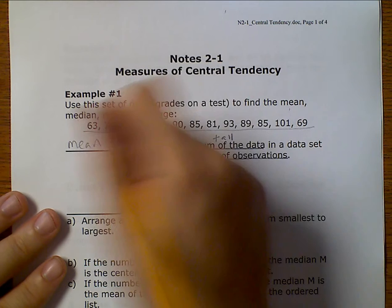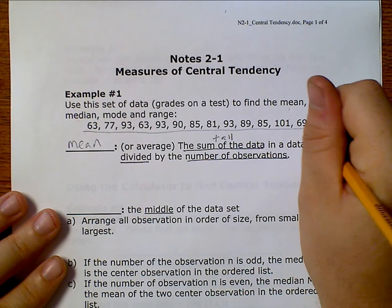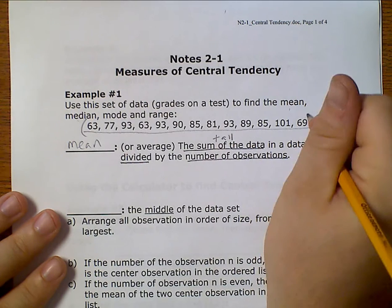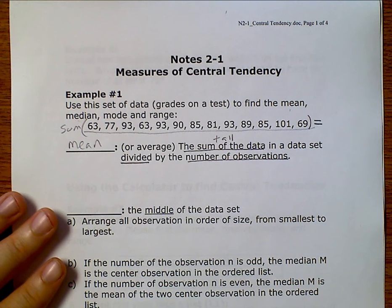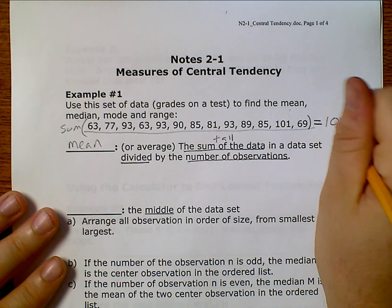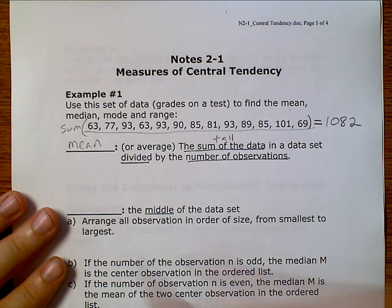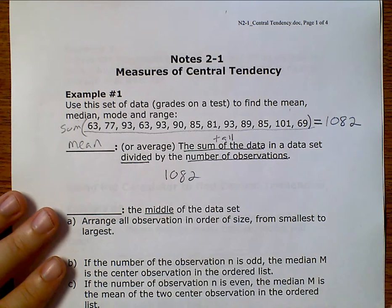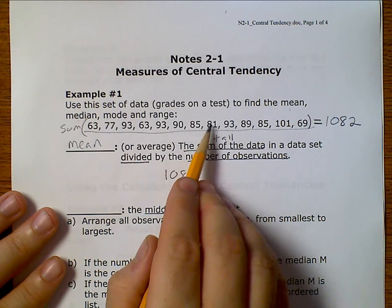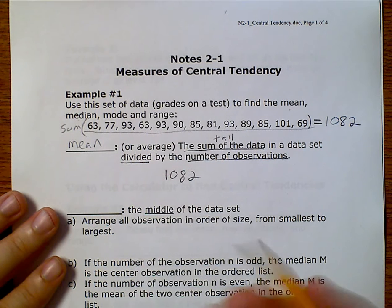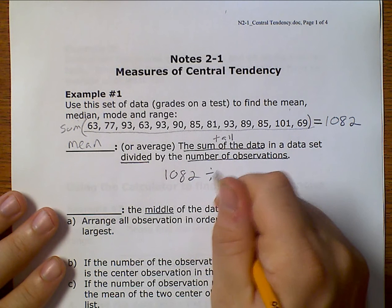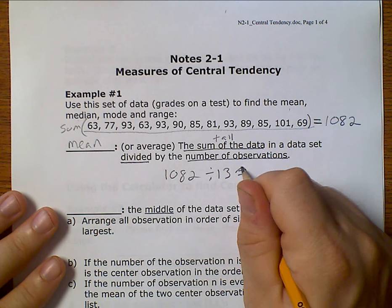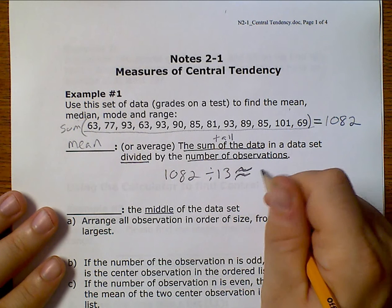So when I add all these up, what I get is 1,082. And I have 13 values in my data set.